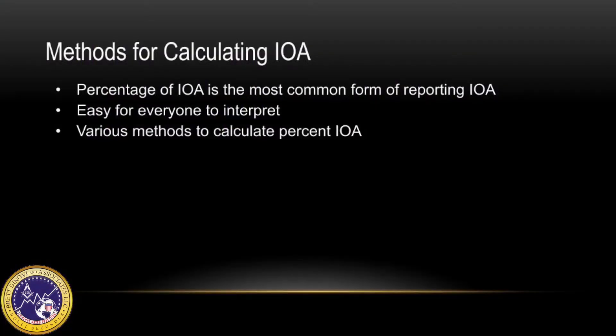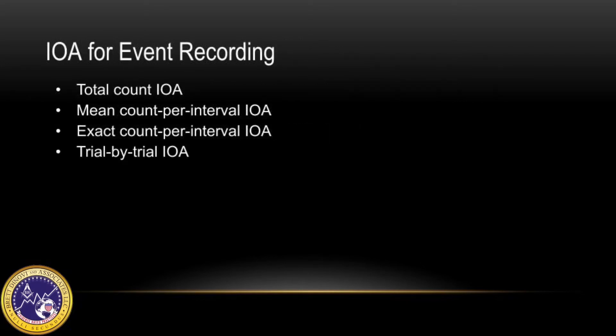Now that we're familiar with the importance and benefits of IOA, we can talk about the various methods for calculating it. Percentage of IOA is the most common form of reporting IOA, as this makes it easy for everyone to interpret. IOA can be calculated for data obtained through event recording using total count IOA, mean count per interval IOA, exact count per interval IOA, and trial by trial IOA.